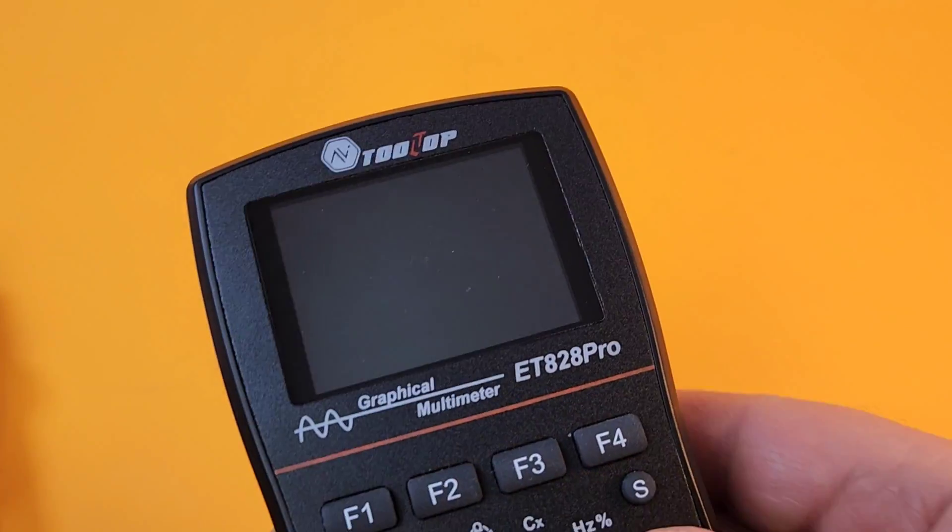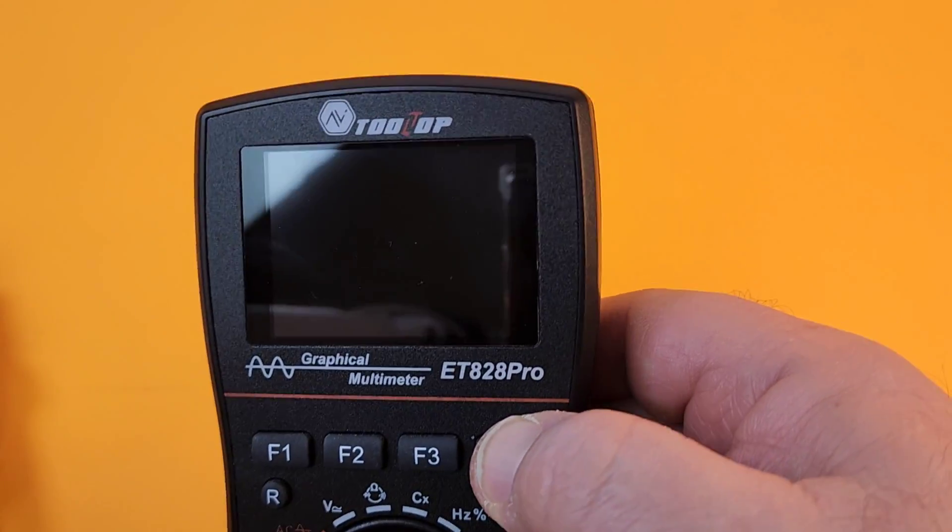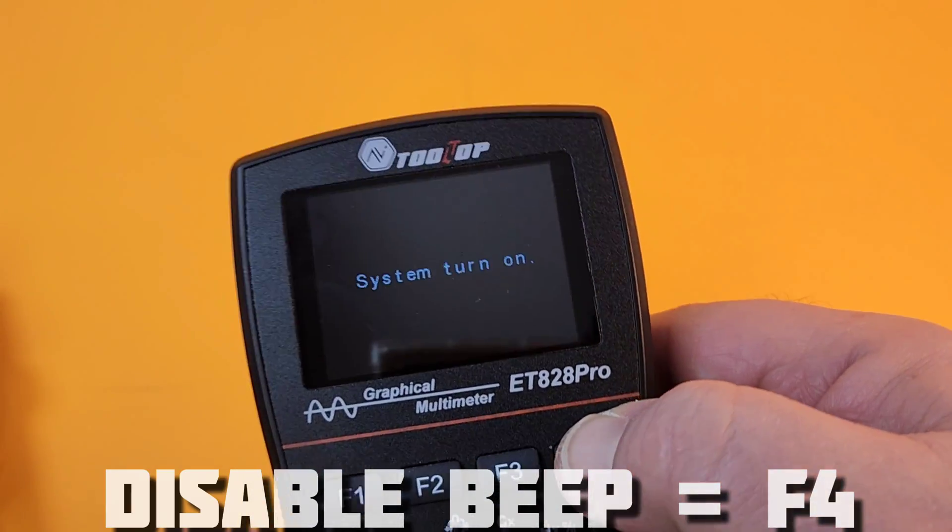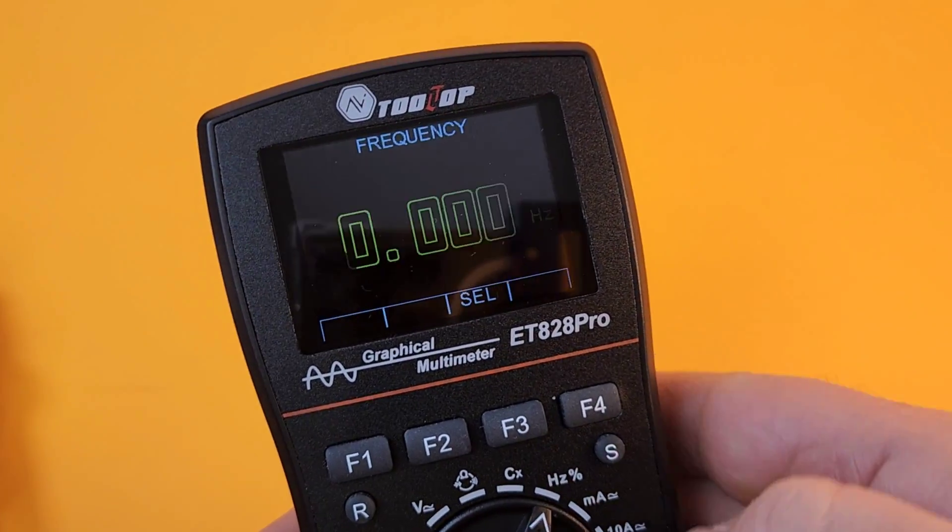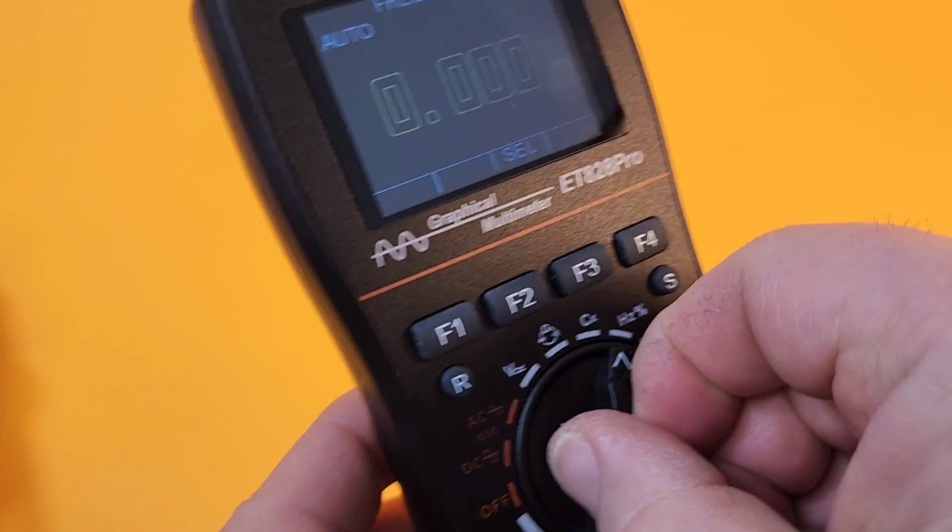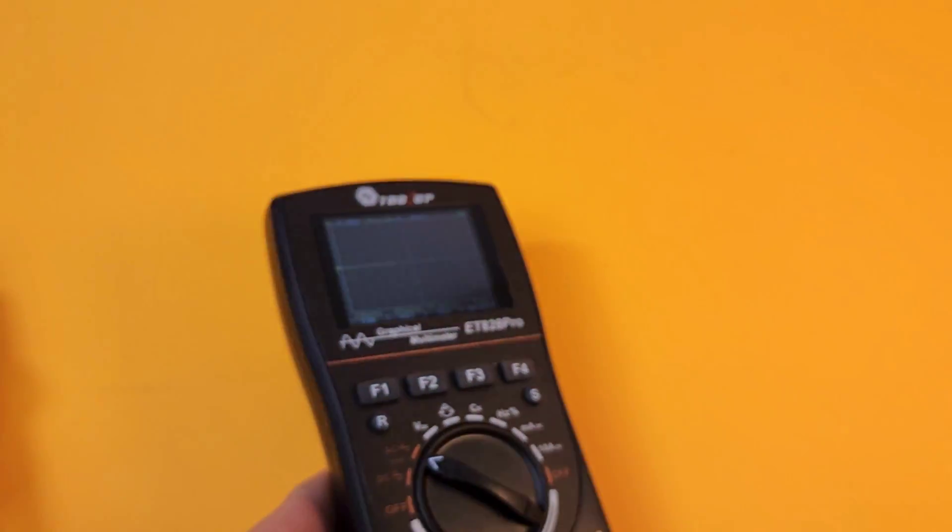If you want to stop that annoying beeping all the time, before you turn the meter on, hold down on the F4 key, then turn it on. Quiet mode is now on. No more beeping.